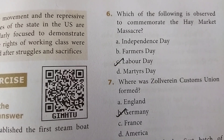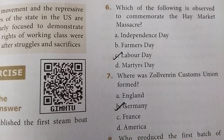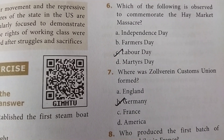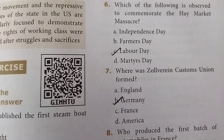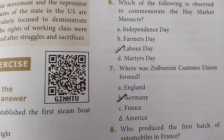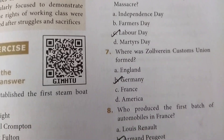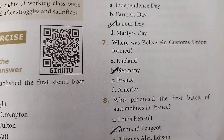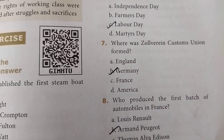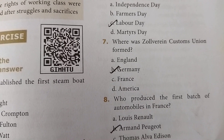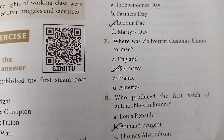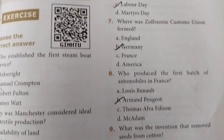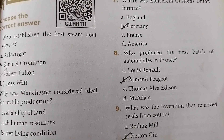Sixth question: which of the following is observed to commemorate the Haymarket Massacre? Answer is C — Labour Day. Seventh one: where was the Zollverein Customs Union formed? Answer is B — Germany.